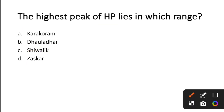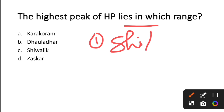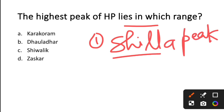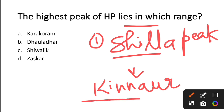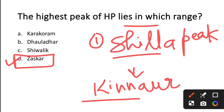The next question is: the highest peak of Himachal Pradesh lies in which range? The highest peak is Shila Peak. Shila Peak is in Kinnaur district. Kinnaur lies in the Zanskar range. So the correct answer is Option D — Zanskar range.